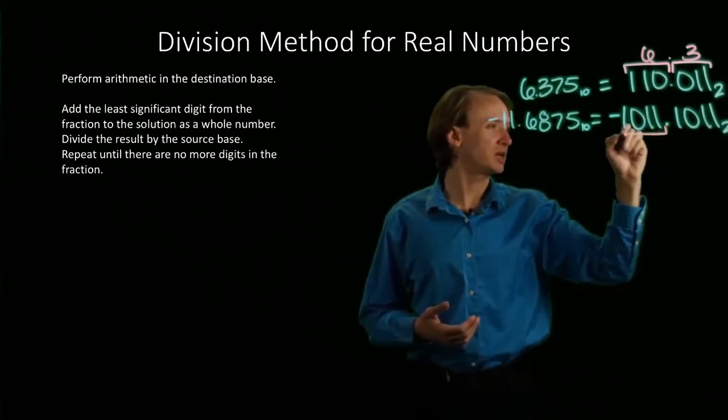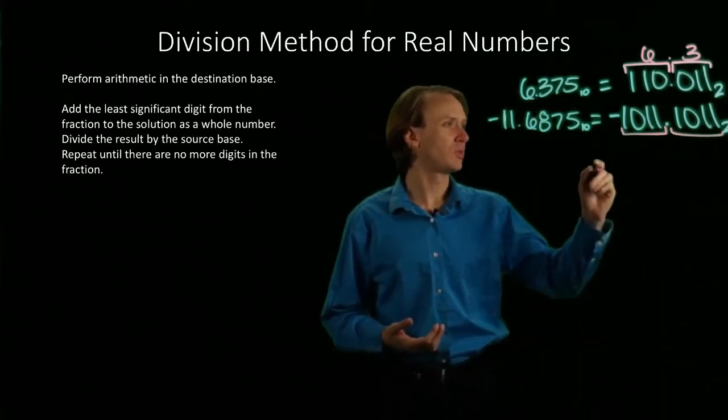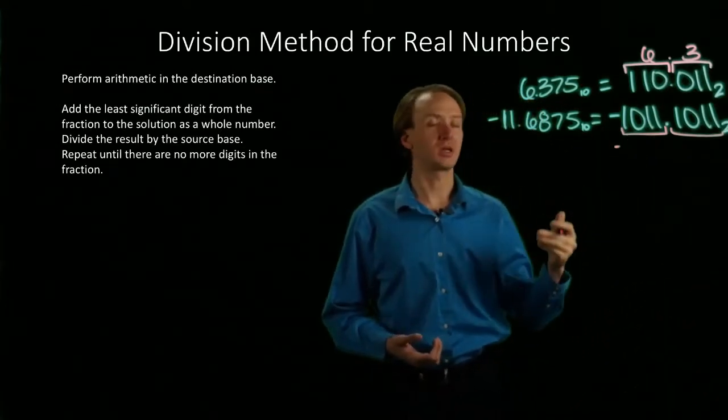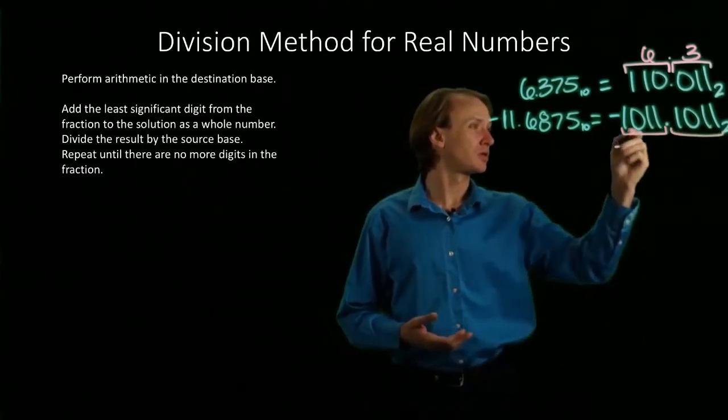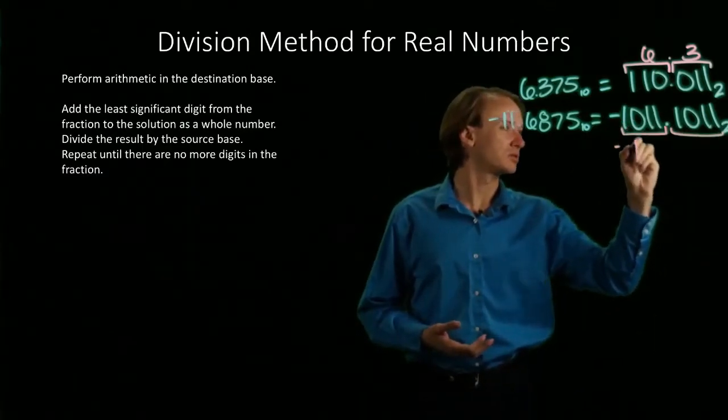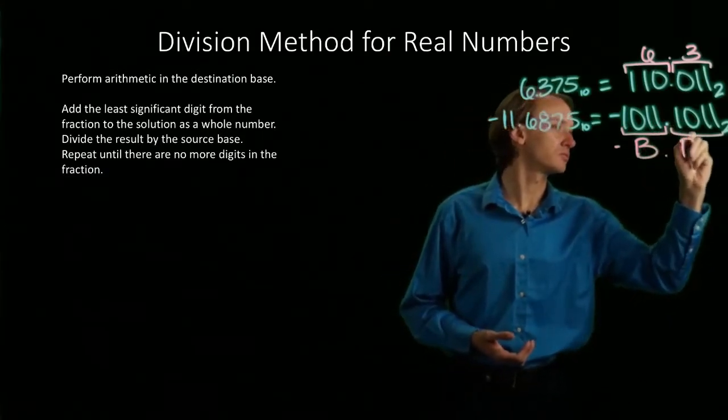I will do the same thing for the second number in hexadecimal, but I'll be looking at blocks of 4 again moving out from the decimal point. So 1011 is b and 1011 is b.